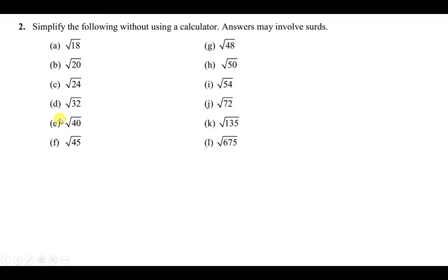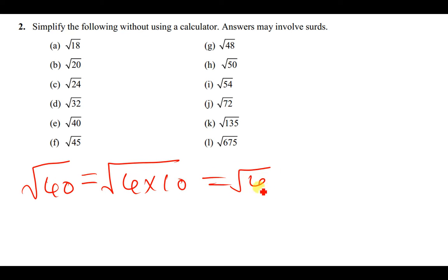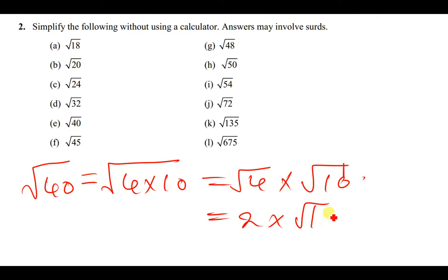For √40, we find a perfect square that can go into 40. Note that 8 is not a perfect square. The perfect square we can use is 4, so we write this as 4 times 10, which is just the same as the square root of 4 times the square root of 10. This gives us 2 times the square root of 10, so the answer is 2√10.